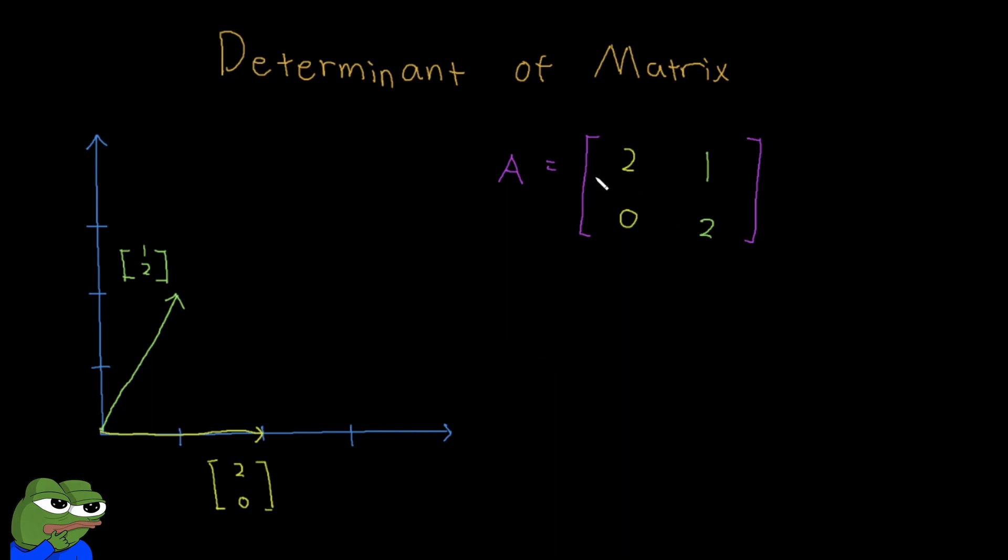So here we have a 2 by 2 matrix. What I did was I set the first column of A to be a vector, and you see I drew that in yellow. So we have the vector 2, 0. And then I set the next column, the second column of A, to also be a vector, and I drew that as a vector over here.